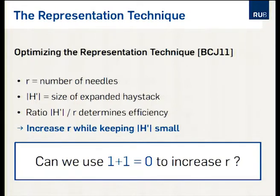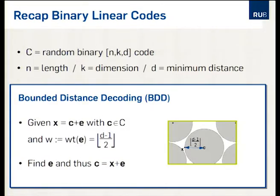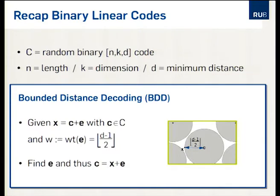Since I will be talking about decoding algorithms, let me do a very short recap about binary codes. C will always denote a random binary [N, K, D] code, where N is the code length, K is the code dimension, and D is the minimum distance. I will only study the bounded distance decoding problem: you start from a codeword C, add an error vector E whose Hamming weight is fixed to the error capability of the code, and given the vector X, your aim is to recover E — or equivalently the codeword C. This problem is related to cryptography because, for example, message recovery for McEliece is exactly this problem.